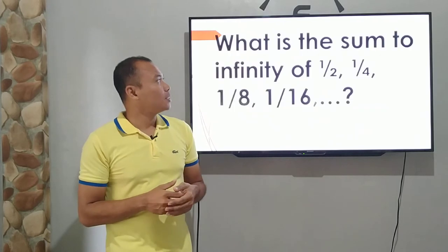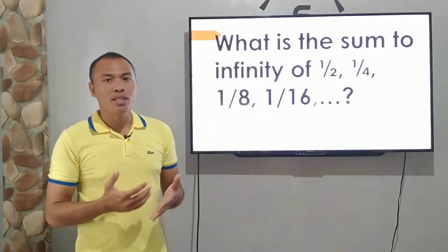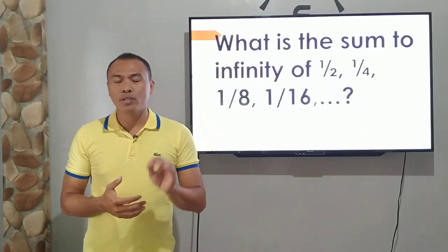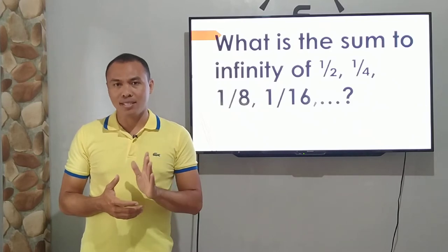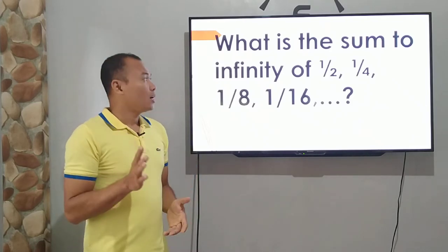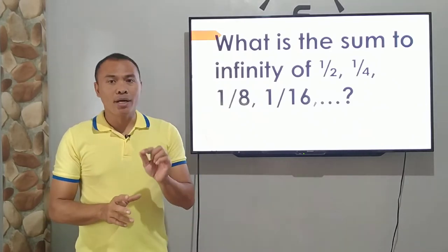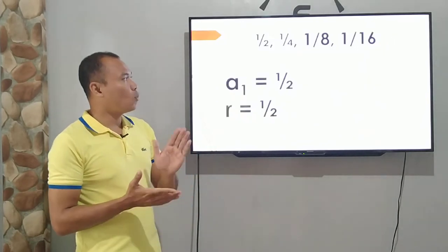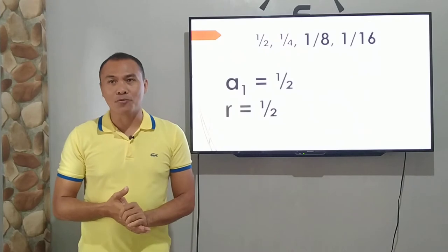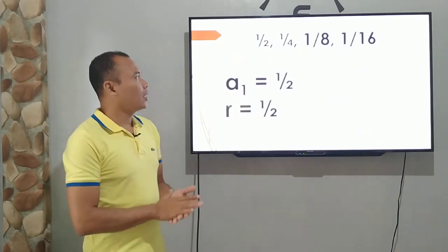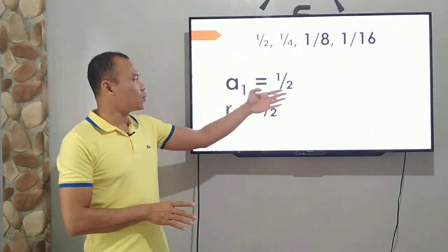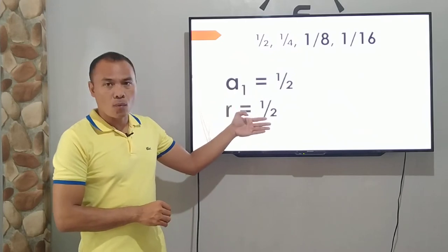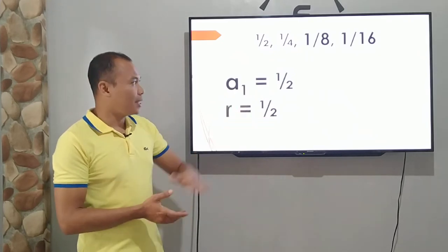So let's try another example. What is the sum to infinity of 1 half, 1 fourth, 1 eighth, 1 sixteenth. So again, to find r, you have to divide. 1 fourth divided by 1 half is 1 half. So our first term is 1 half and r is 1 half. And let's substitute.